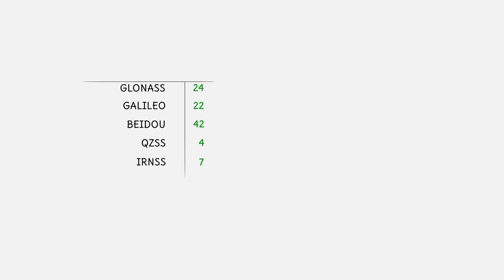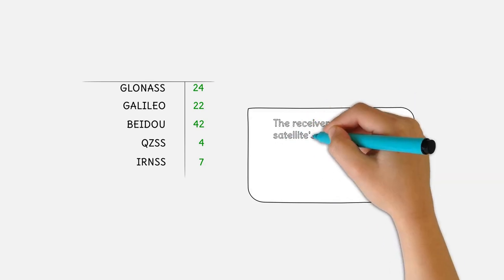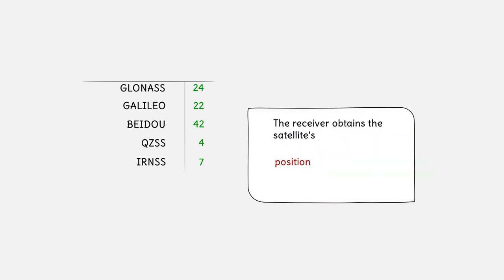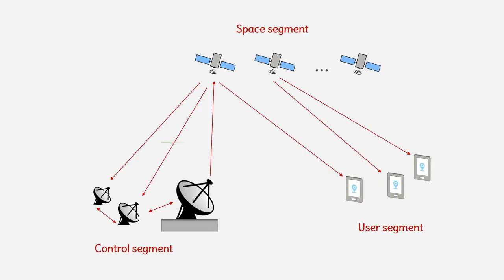The satellites know their orbit parameters and time very accurately. Information is transmitted to the receiver to obtain the satellite's position, time and status. The control segment comprises of a network of monitor, control and upload stations to ensure healthy satellites.